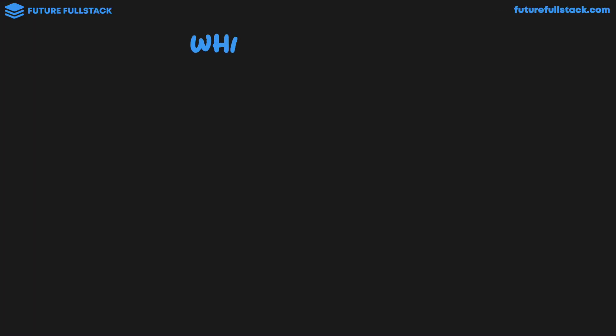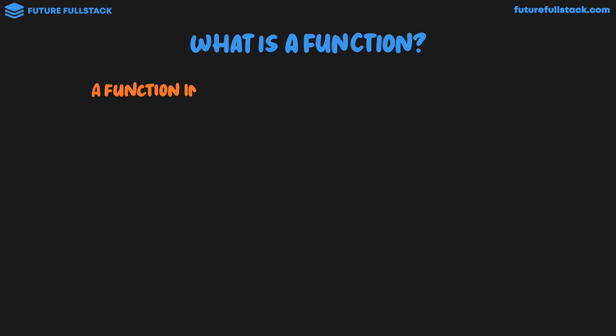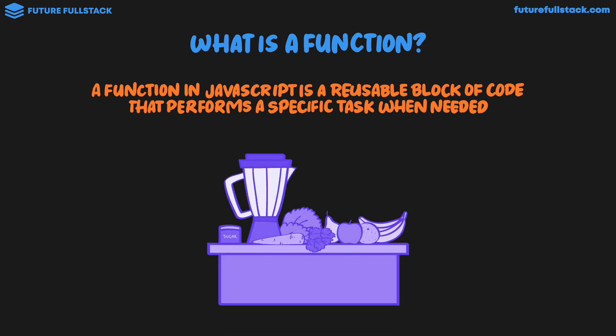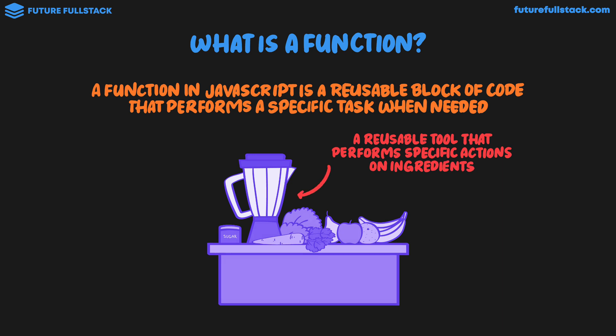So what is a function? A function in JavaScript is a reusable block of code that performs a specific task when needed. Back to our juice bar analogy, a function would be a reusable tool that performs specific actions on ingredients. So for example, this blender is a piece of equipment that we can reuse as many times as we like to blend different ingredients.